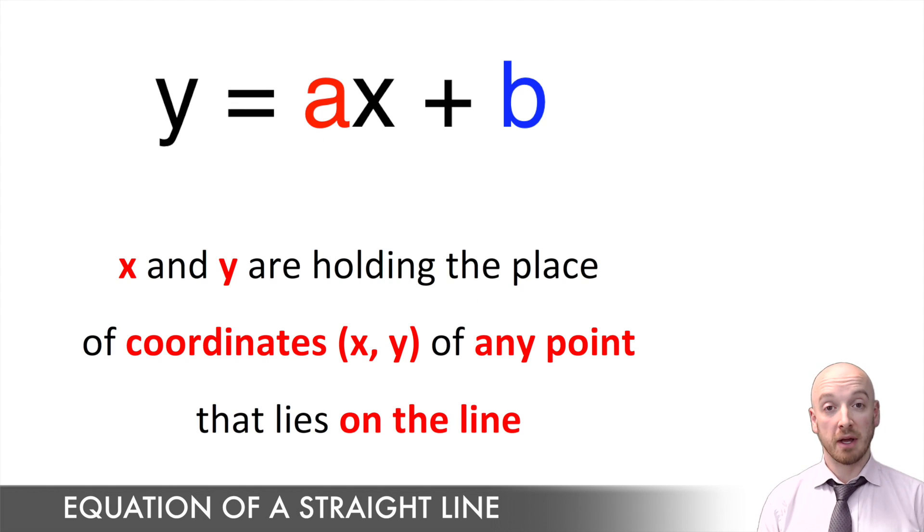Well, x and y are just holding the place of coordinates of any point that might lie on the line that we're talking about. And actually that comes in pretty handy because if x and y represent the coordinates of any point along the line, then we could plug in a set of coordinates to an equation and see if a point lies on a line or not. You're gonna see that in the example at the end of the video.